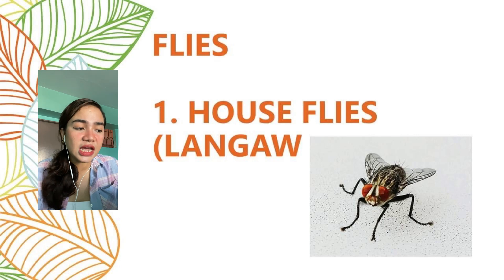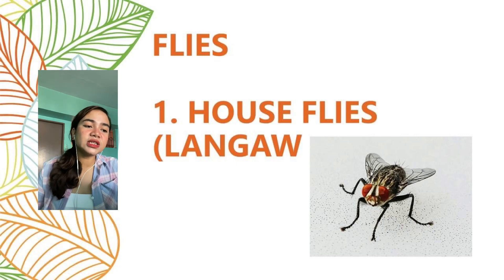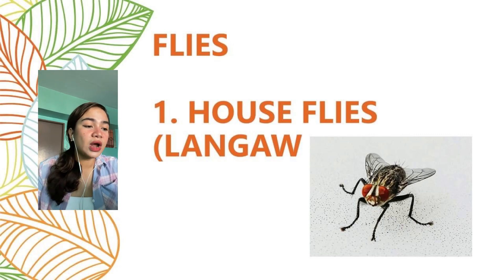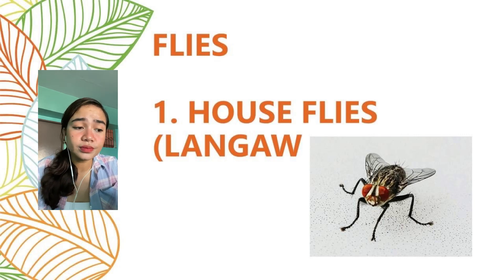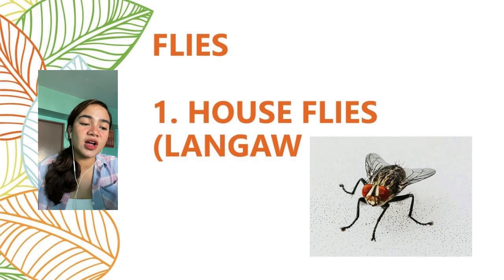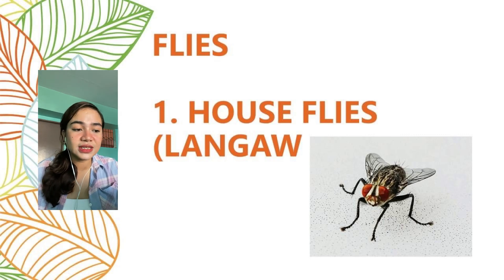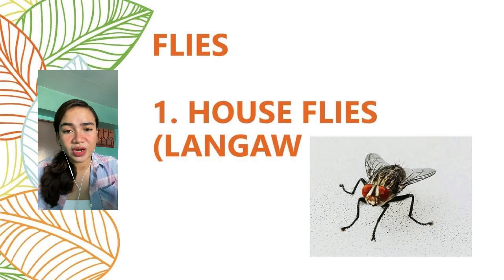In an event that they ingest some of the fecal matter, thousands of deadly microorganisms are ingested by the fly. A fly cannot eat solid food because it does not have teeth to chew, so it vomits on solid food to soften it before eating. In doing so, many of the bacteria ingested by the fly are spread on the food, making it contaminated. In addition, the hairs of their feet, body, and wings are already contaminated with these microorganisms, so when a fly lands on a clean working area, it is already contaminated.